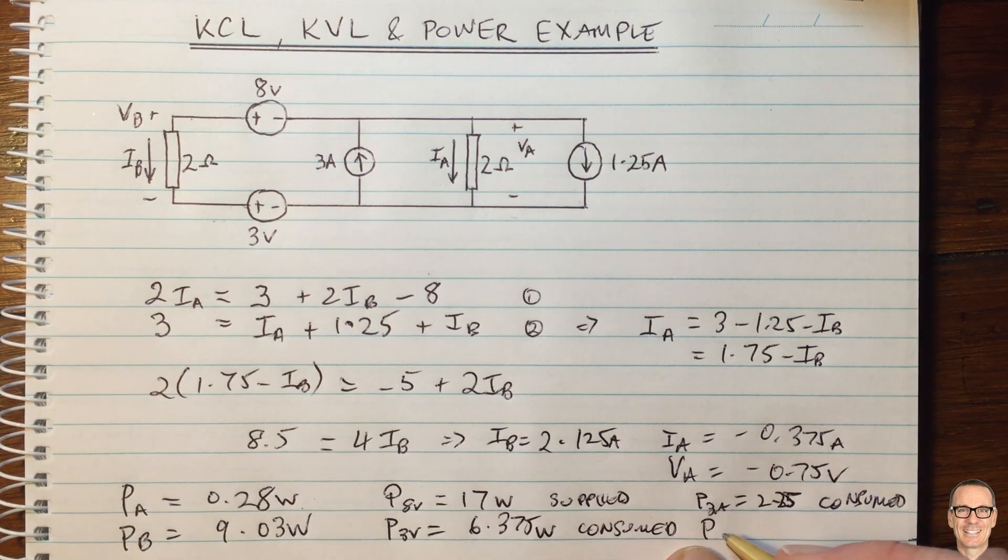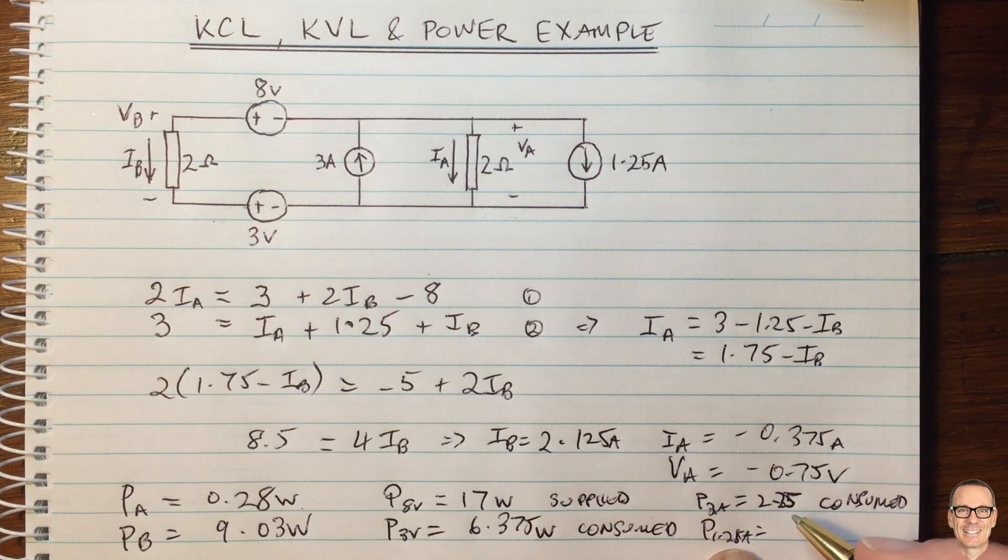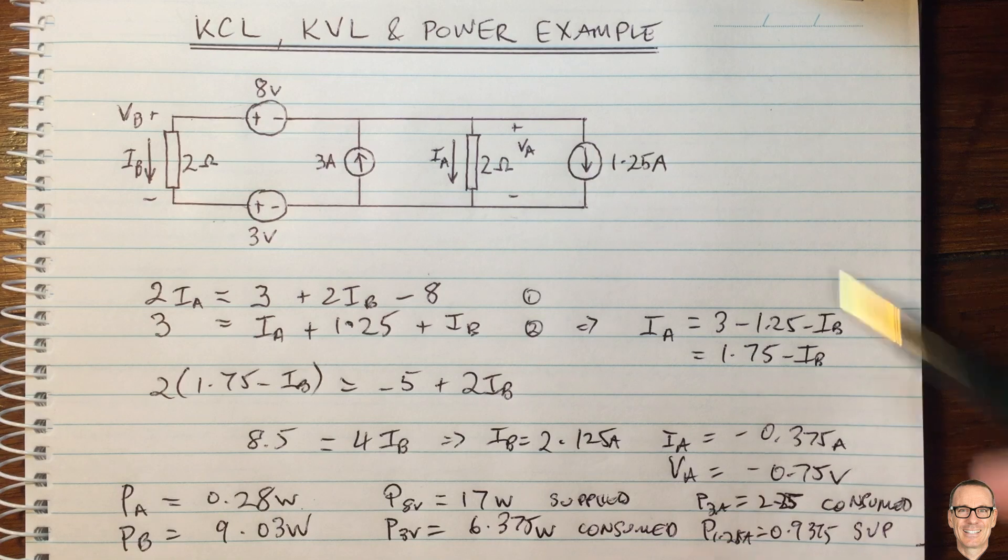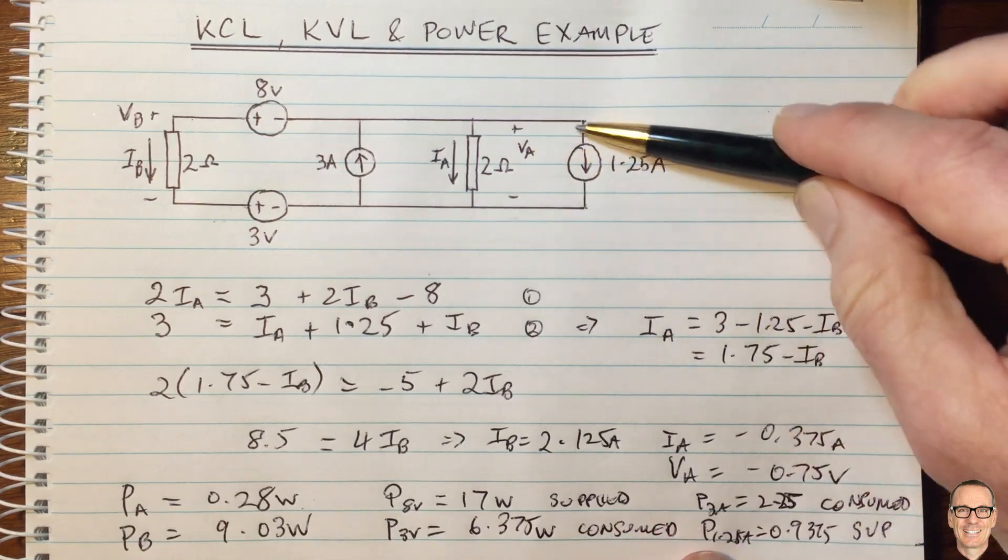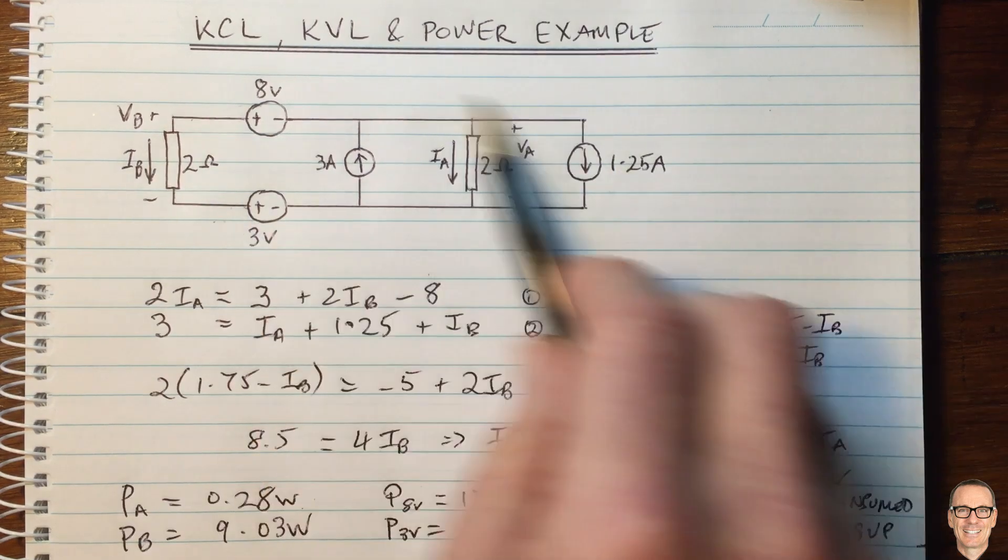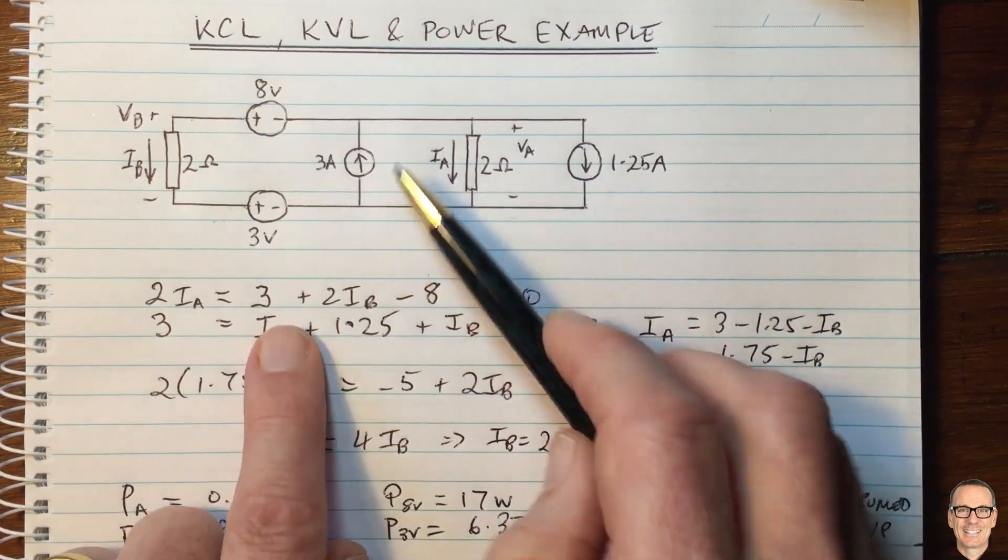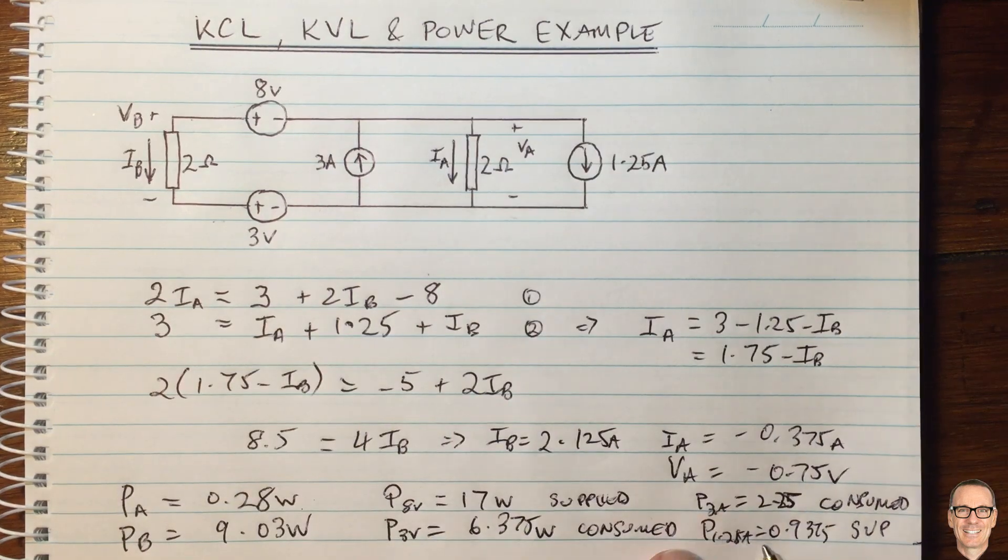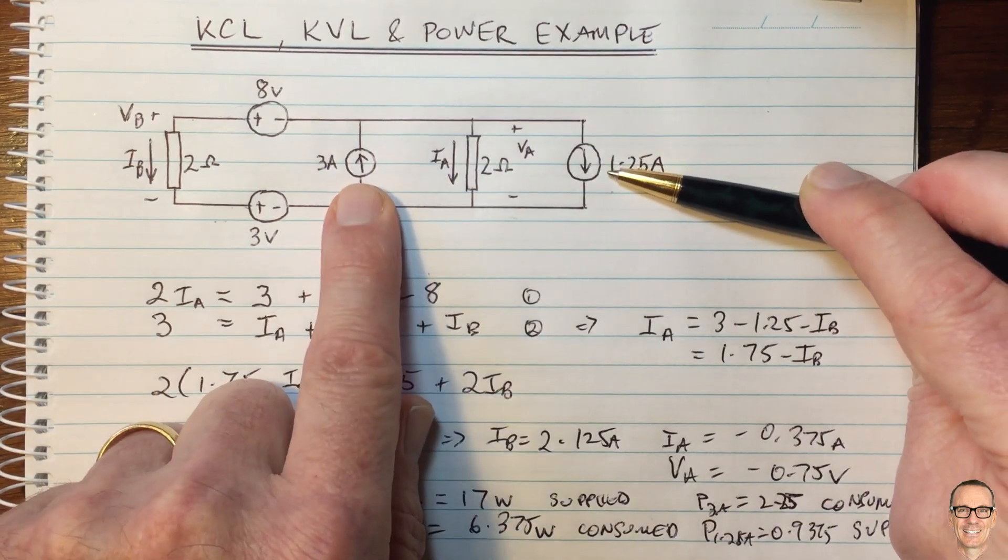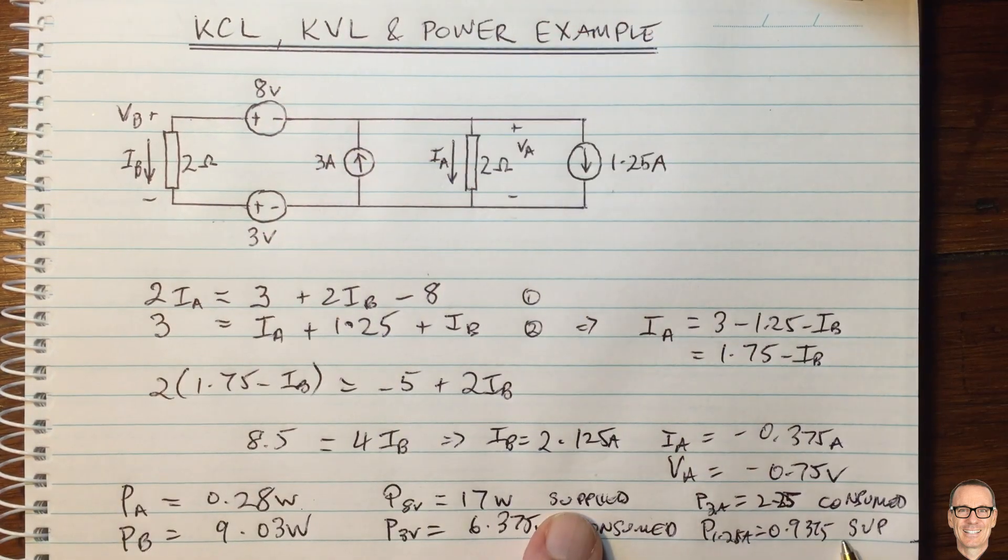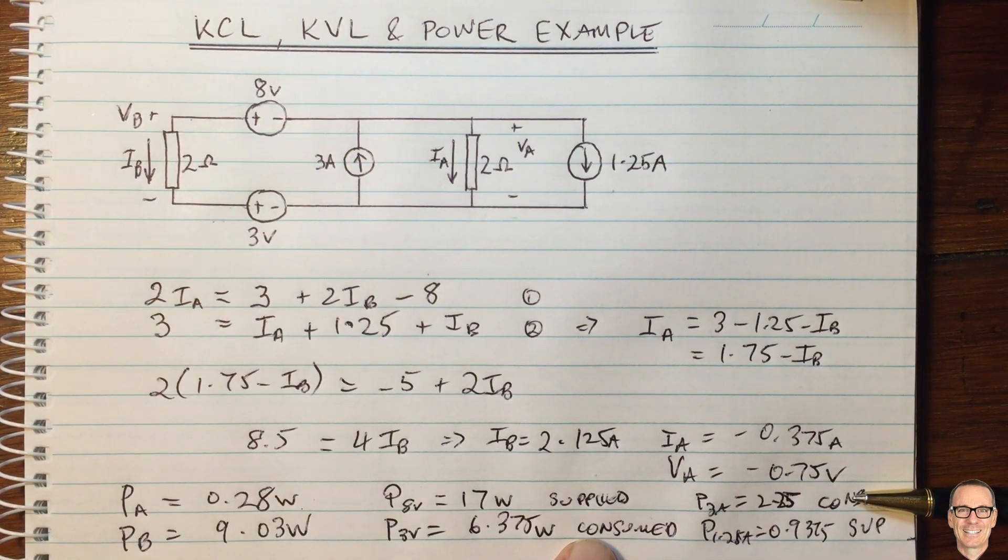And then the power in the 1.25 amps, which equals 0.9375, is supplied, because that's a positive. The voltage is in the same polarity matching the direction of the current. So it's quite a complicated circuit. We've used fairly straightforward current laws and voltage laws, and we've observed some interesting things about these constant current sources and constant voltage sources, is that two of them are supplying power and two of them are actually consuming power.